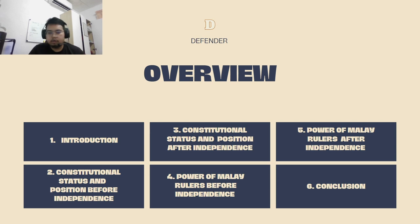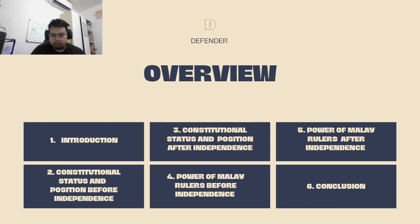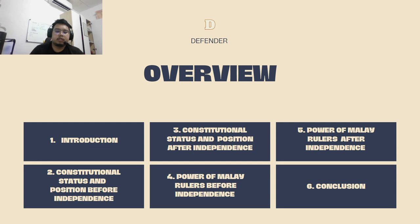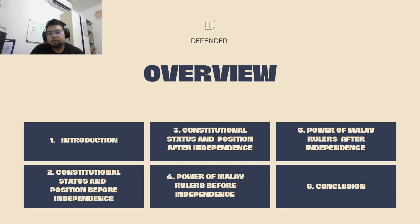Let's go to the overview of our presentation. First, we go to the introduction. Second is the constitutional status and position before independence. The third one, constitutional status and position after independence. Number four, power of Malay rulers before independence. Number five, power of Malay rulers after independence. And finally, a conclusion.